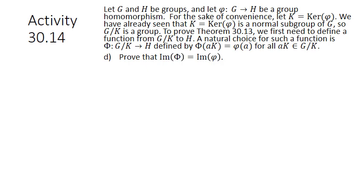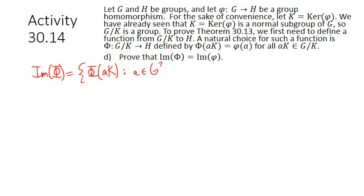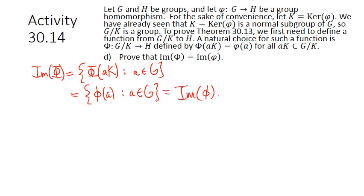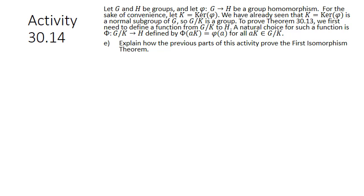For part D, prove that the image of capital Phi equals the image of little phi. The image of capital Phi is all outputs capital Phi of AK for A in G. By definition of capital Phi, this equals all outputs phi of A for A in G, which is simply the image of little phi. That's not a very hard argument at all.